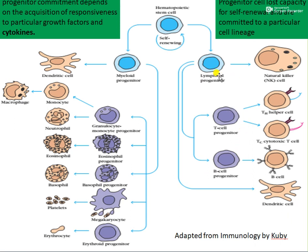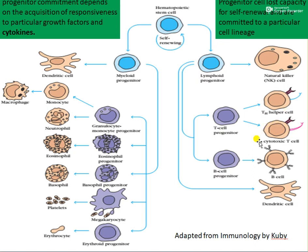The lymphoid progenitor cell will form NK cells, or a T cell progenitor which divides to form T helper cells and T cytotoxic cells. There is also the B cell progenitor, which is committed to form B cells. The lymphoid progenitor can also give rise to dendritic cells.